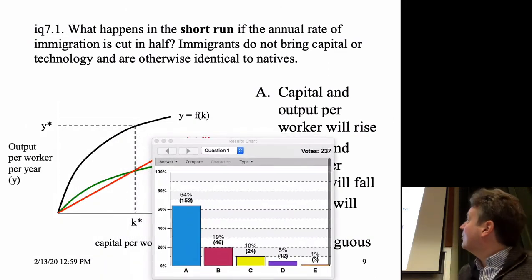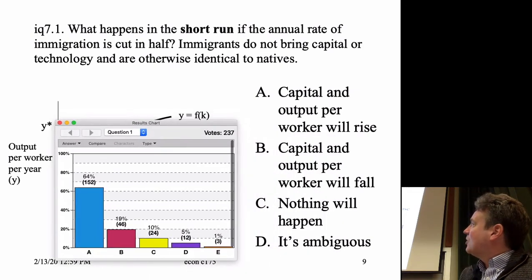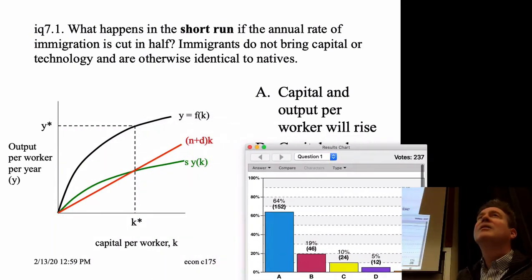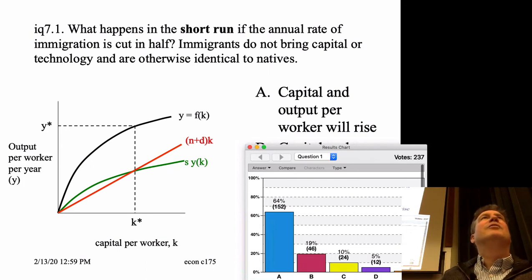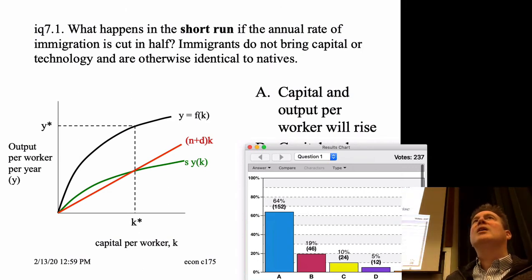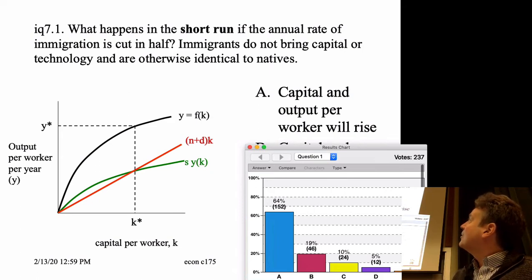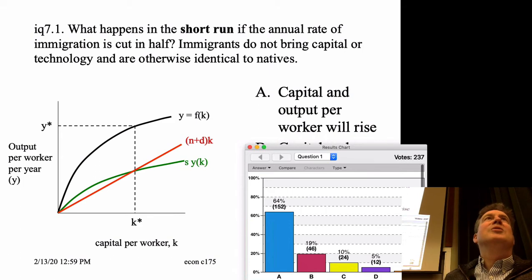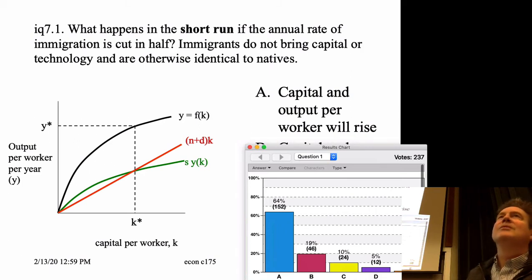In the short run, if the rate of immigration falls the population growth rate falls, which pivots the red line clockwise — it gets flatter. But in the short run we're still at K-star; we're talking about a rate of change altering, not the level. So nothing changes in the levels of capital or output per worker in the short run. It's a tough one.